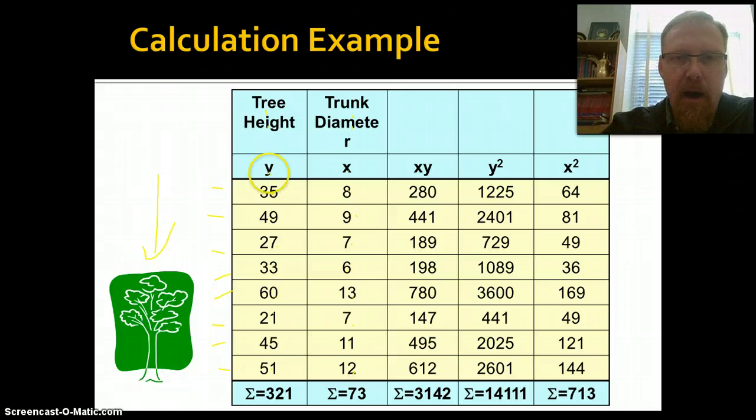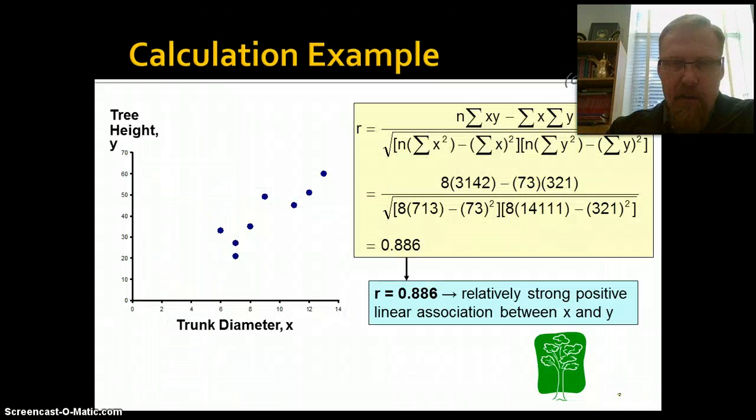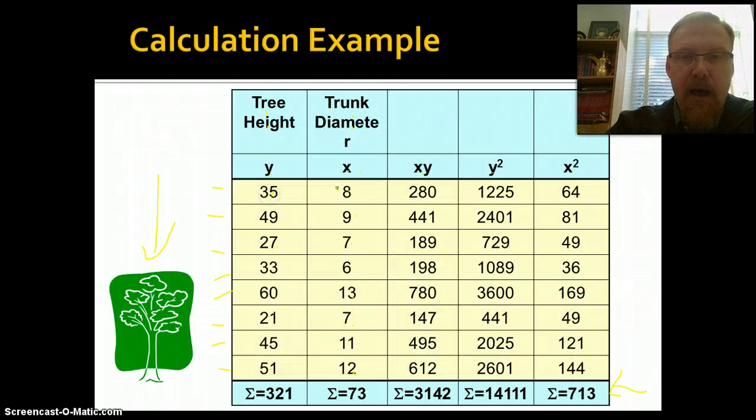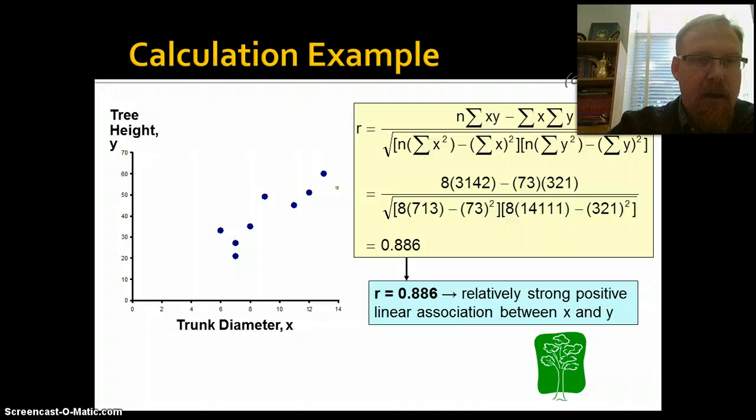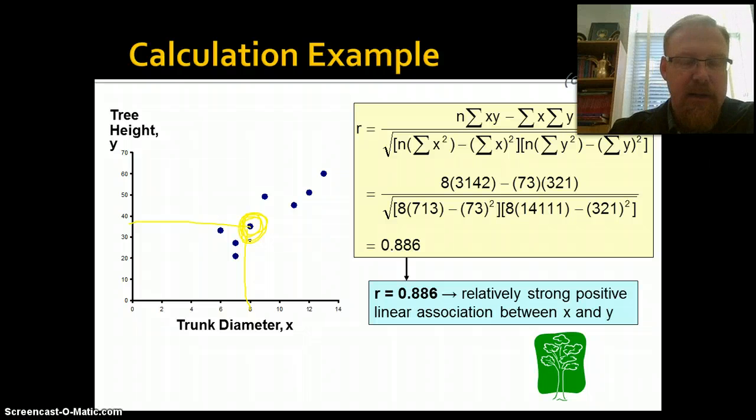So we have Y, we have X, we have X times Y, we have Y squared, and we have X squared. And then we have the sums down here at the bottom of each of those. And if we wanted to, we could plot it. So for example, Y is 35, X is 8. Y is 35, X is 8. Right? So that's that one case right there, the intersection. And if we plotted all of them, this is what we get.